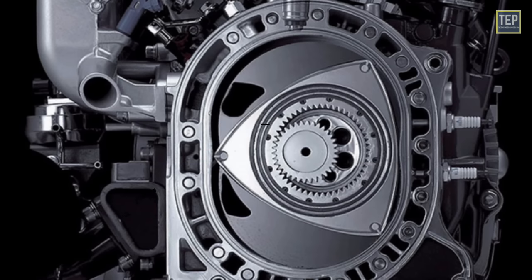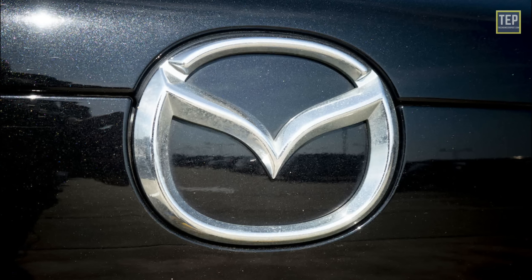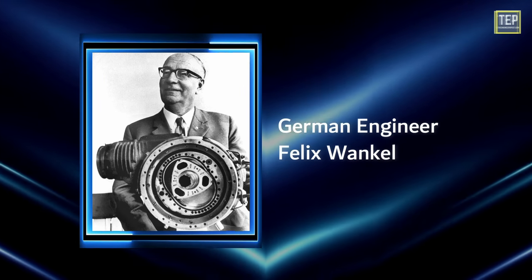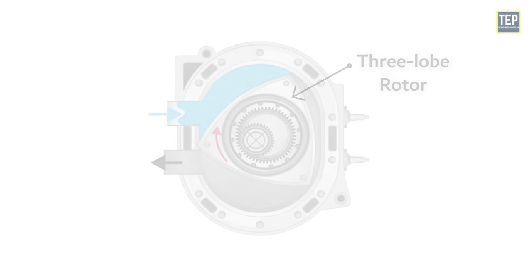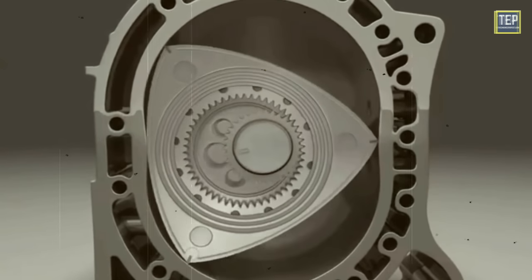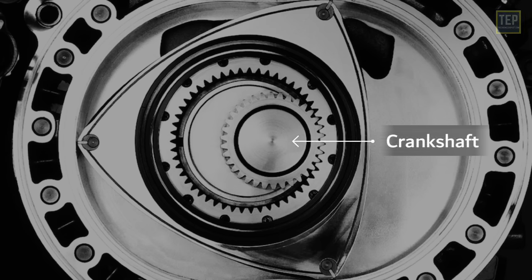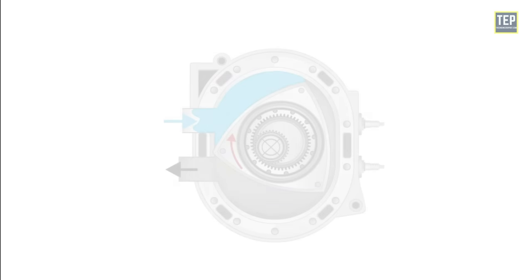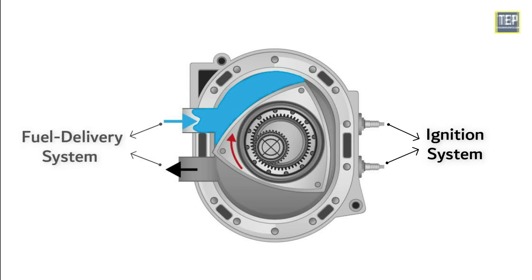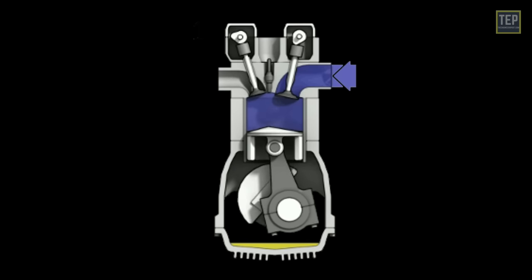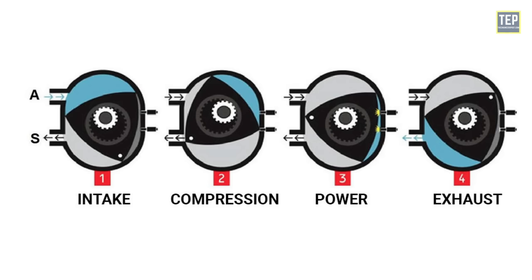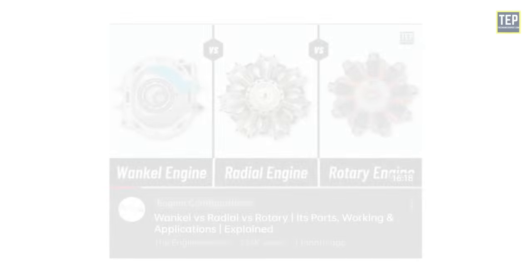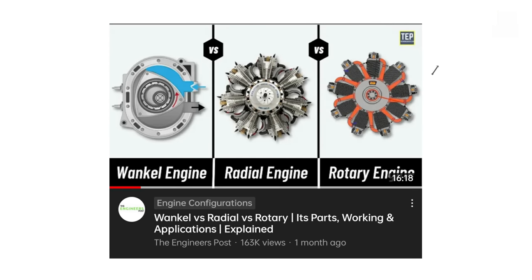The rotary engine is a truly unique concept, made successful by Mazda. It was invented by German engineer Felix Wankel and consists of a three-lobe rotor of triangular shape with curved sides that rotates eccentrically in an oval chamber. The rotor is mounted on the crankshaft through external and internal gears. A Wankel rotary engine has an ignition system and fuel delivery system similar to those on piston engines. Wankel rotary engines use the four-stroke combustion cycle, accomplished in a completely different way than traditional piston engines.